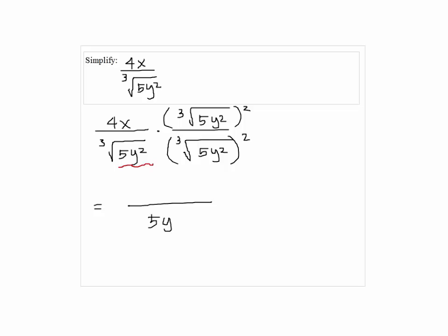So we have 5y squared on the bottom since we have three cube roots. On top, we have 4x times the cube root of 25y to the 4th power.